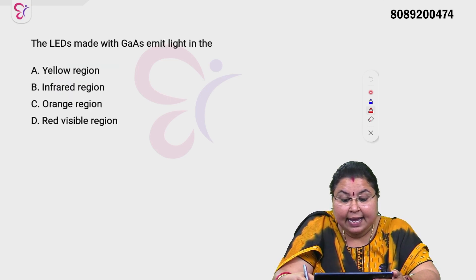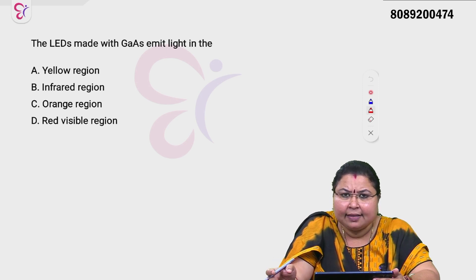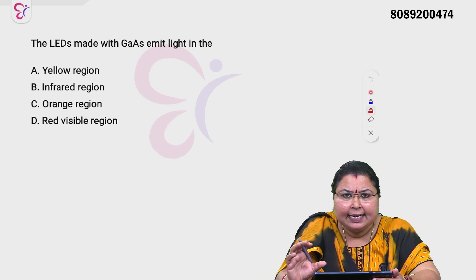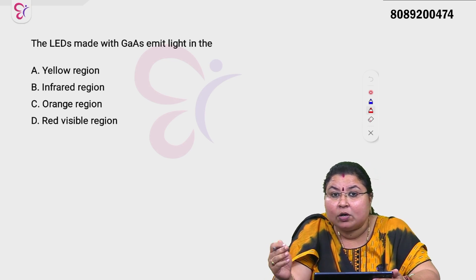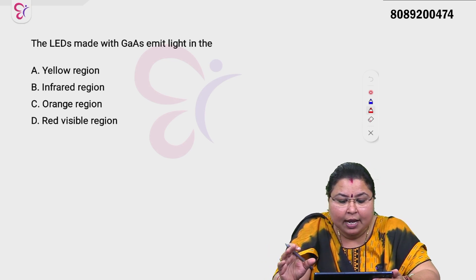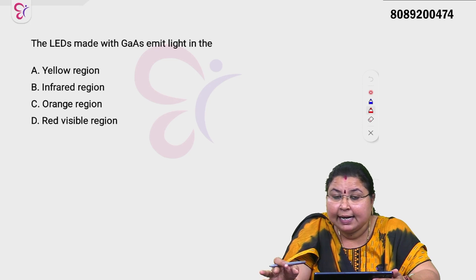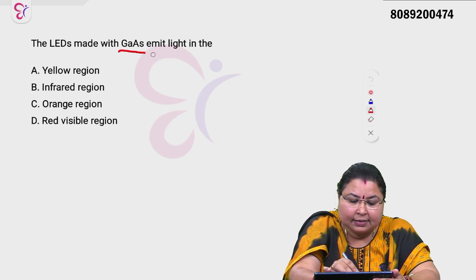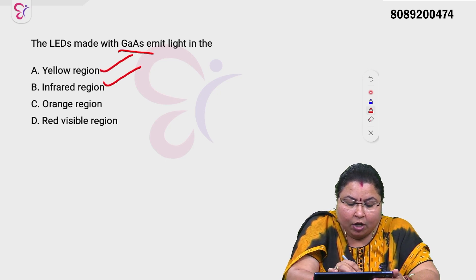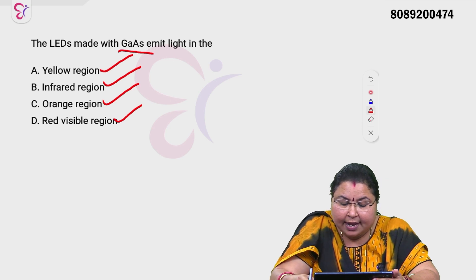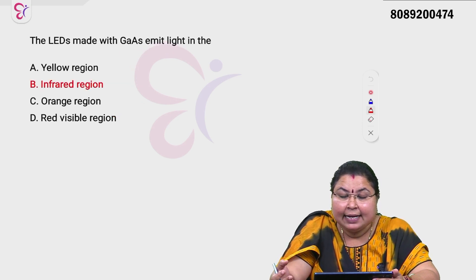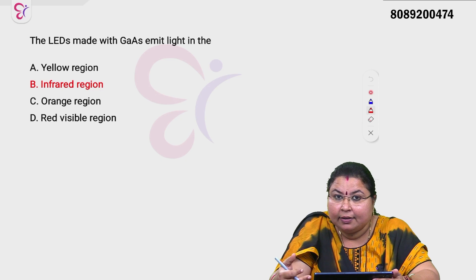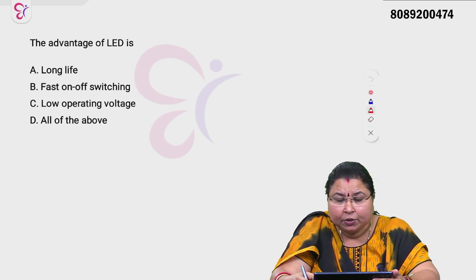The LED made with gallium arsenide (GaAs) emits light in which region? Options include yellow region, infrared region, orange region, and red visible region. The LED with gallium arsenide will emit light in the infrared region. That is the correct answer.